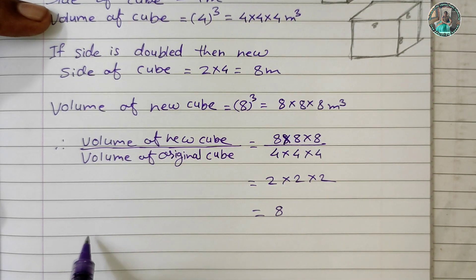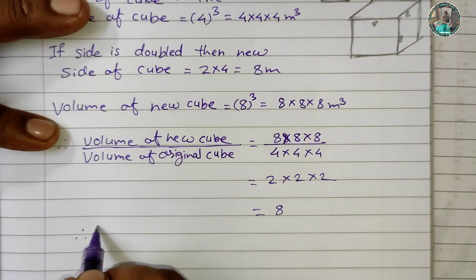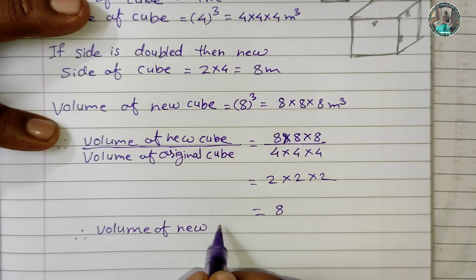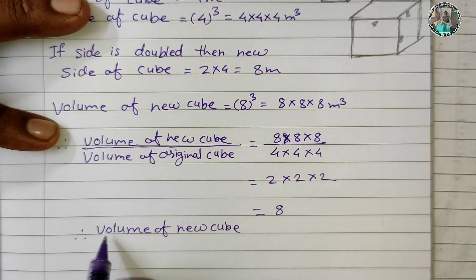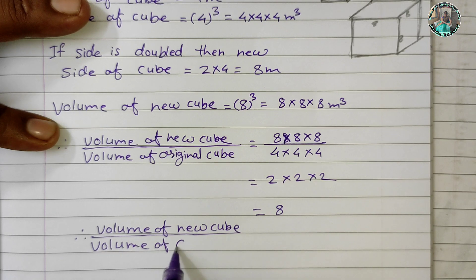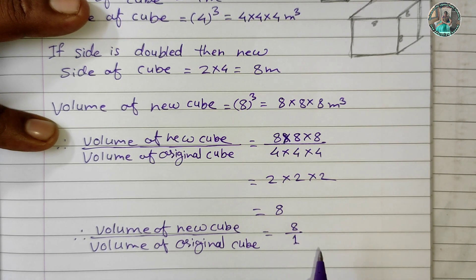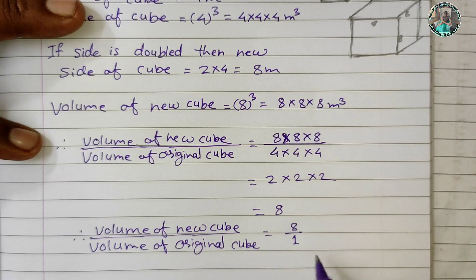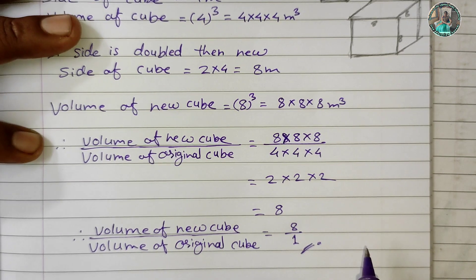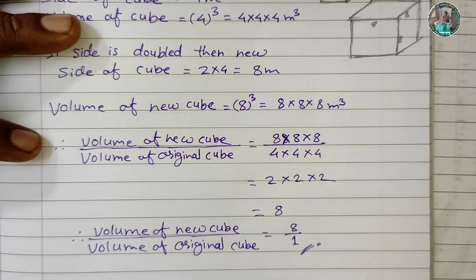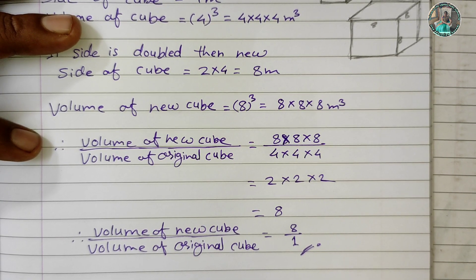Therefore, volume of new cube = 8 upon 1. The answer is 8 upon 1 — the new cube's volume is 8 times that of the original cube.